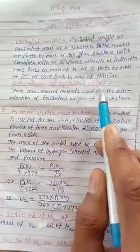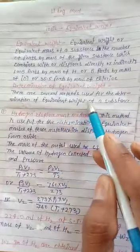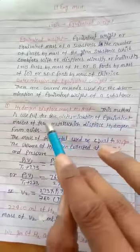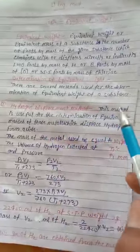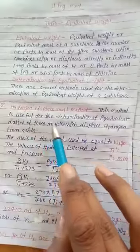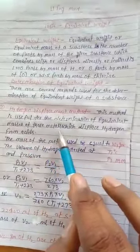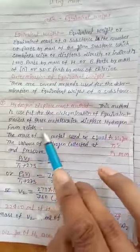Determination of equivalent weight. There are several methods used for the determination of equivalent weight of a substance. Hydrogen displacement method: This method is useful for the determination of equivalent mass of those metals which displace hydrogen from acids.